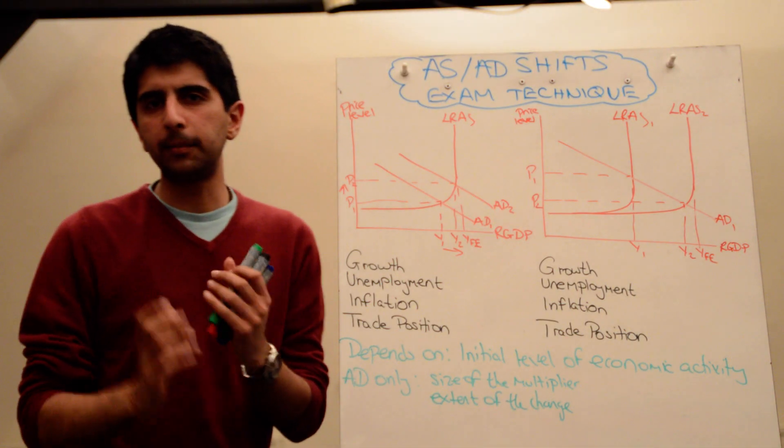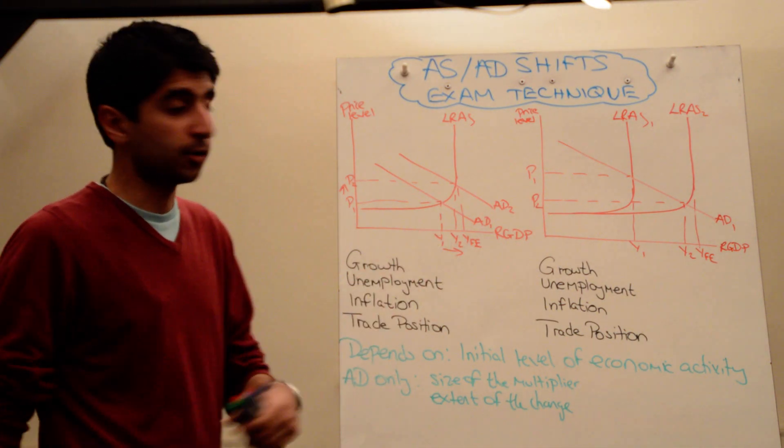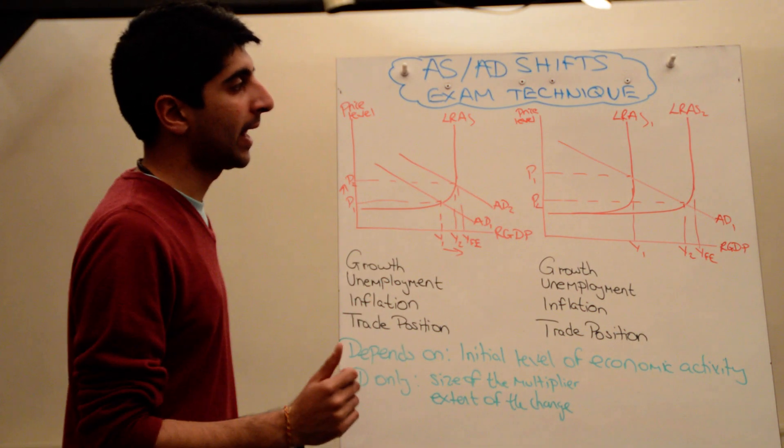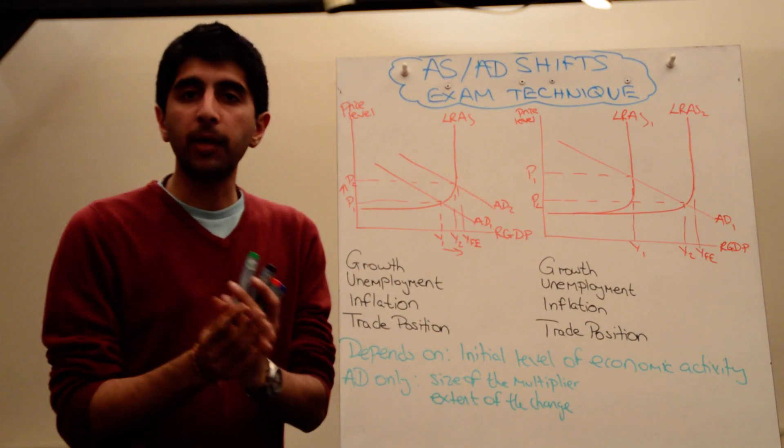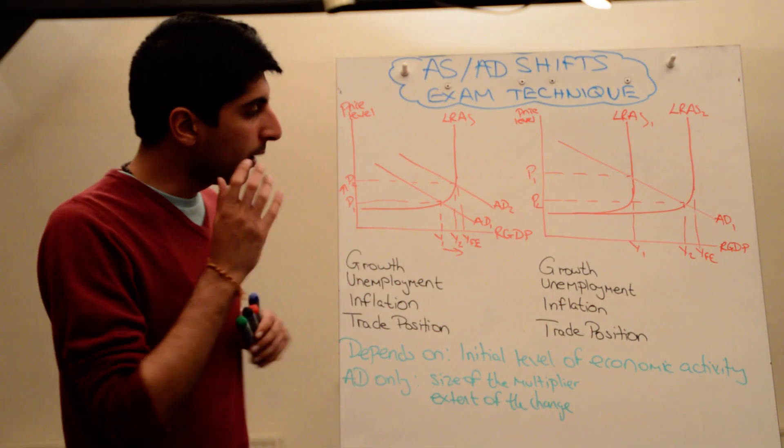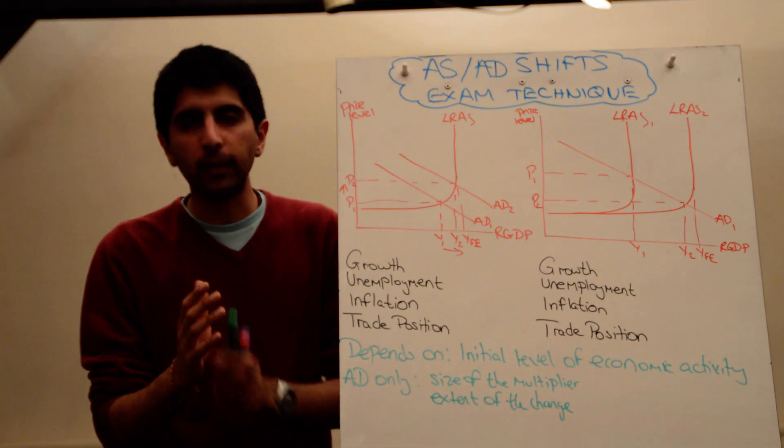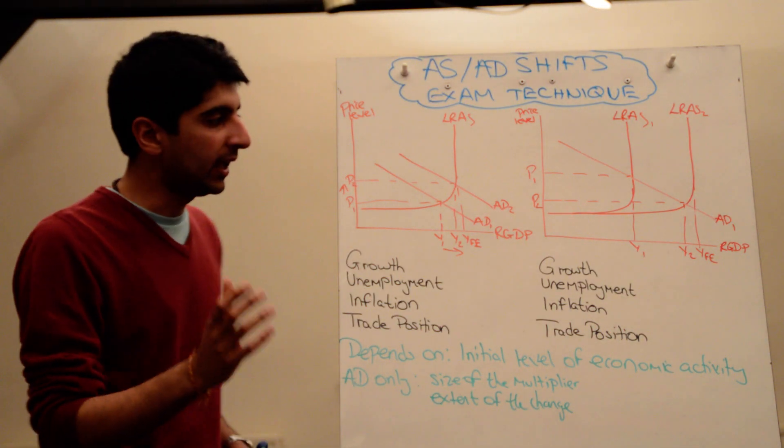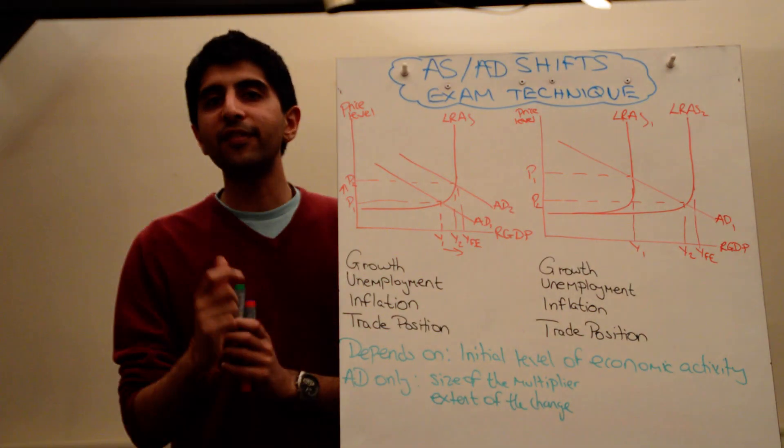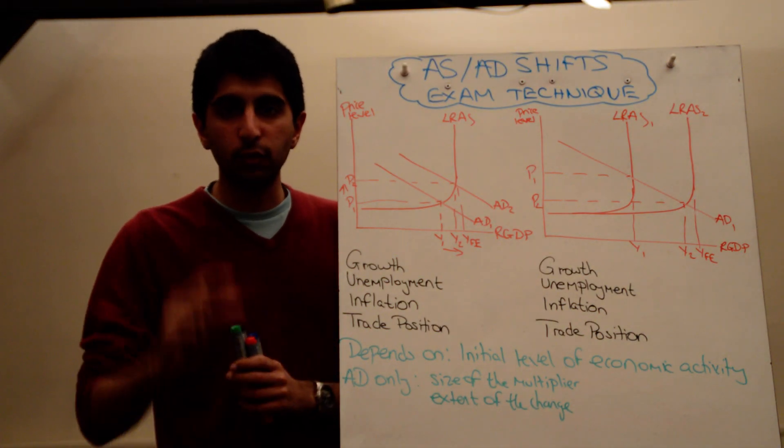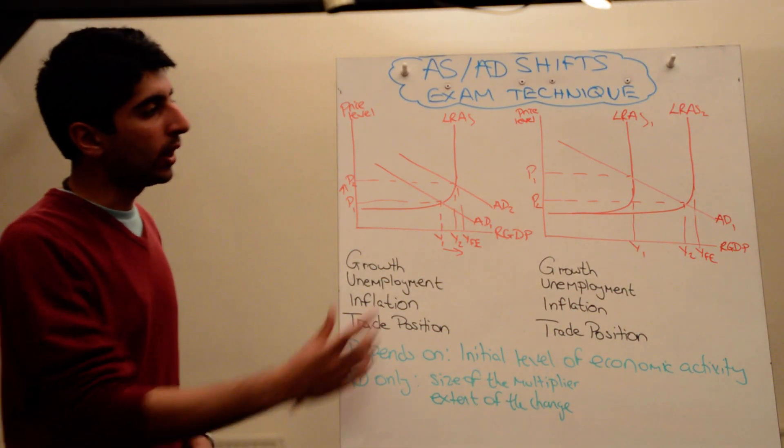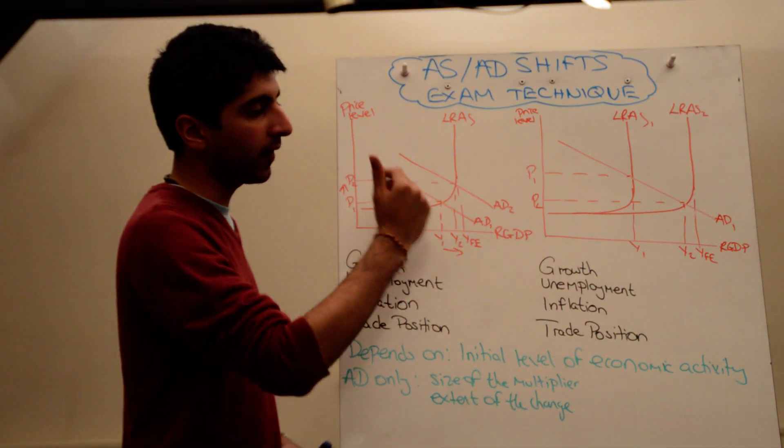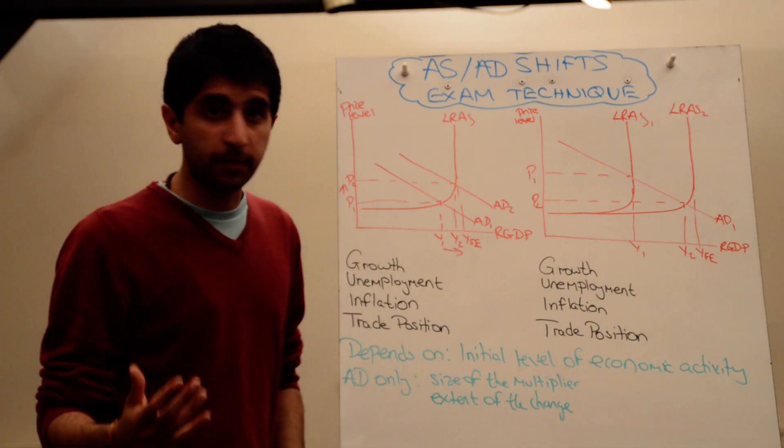So, something I'm sure you'll end up drawing in your exam, probably both diagrams, is a shift of aggregate demand and a shift of aggregate supply, both of which will probably form the heart of your analysis. You need to know how to talk about these effects very carefully, and you need to make sure you explain the effects on the macroeconomic indicators with crisp, concise and clear detail. Let's have a look at both shifts, shifts of aggregate demand and shifts of aggregate supply.